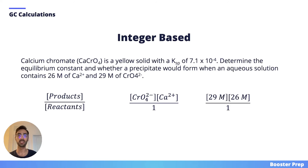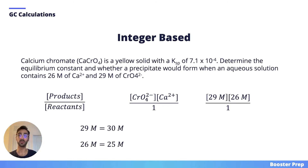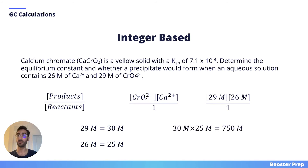Now these aren't the worst numbers to deal with, but they also aren't the easiest. So I'm going to round 29 to 30 and round 26 down to 25. So instead of multiplying 29 by 26, we can simply multiply 30 by 25. It's super simple — we drop the zero from 30, multiply 25 by 3, which is 75, and then tack the zero back on to get 750.